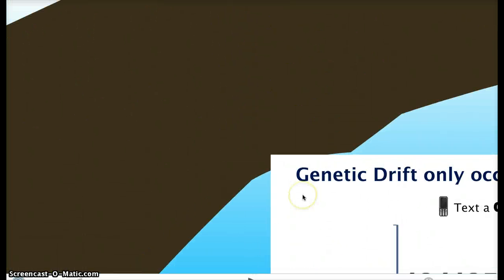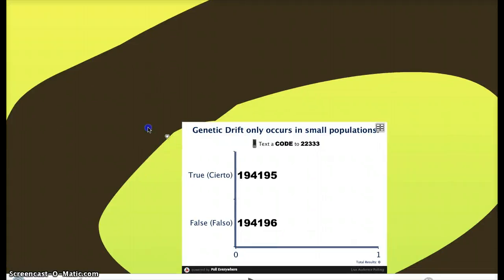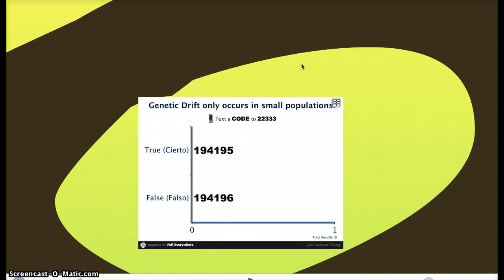I'm gonna skip this because this is a poll question I will be asking in class. But just for you to get an idea: genetic drift occurs only in small populations, true or false. I'm gonna leave that to you guys during class.